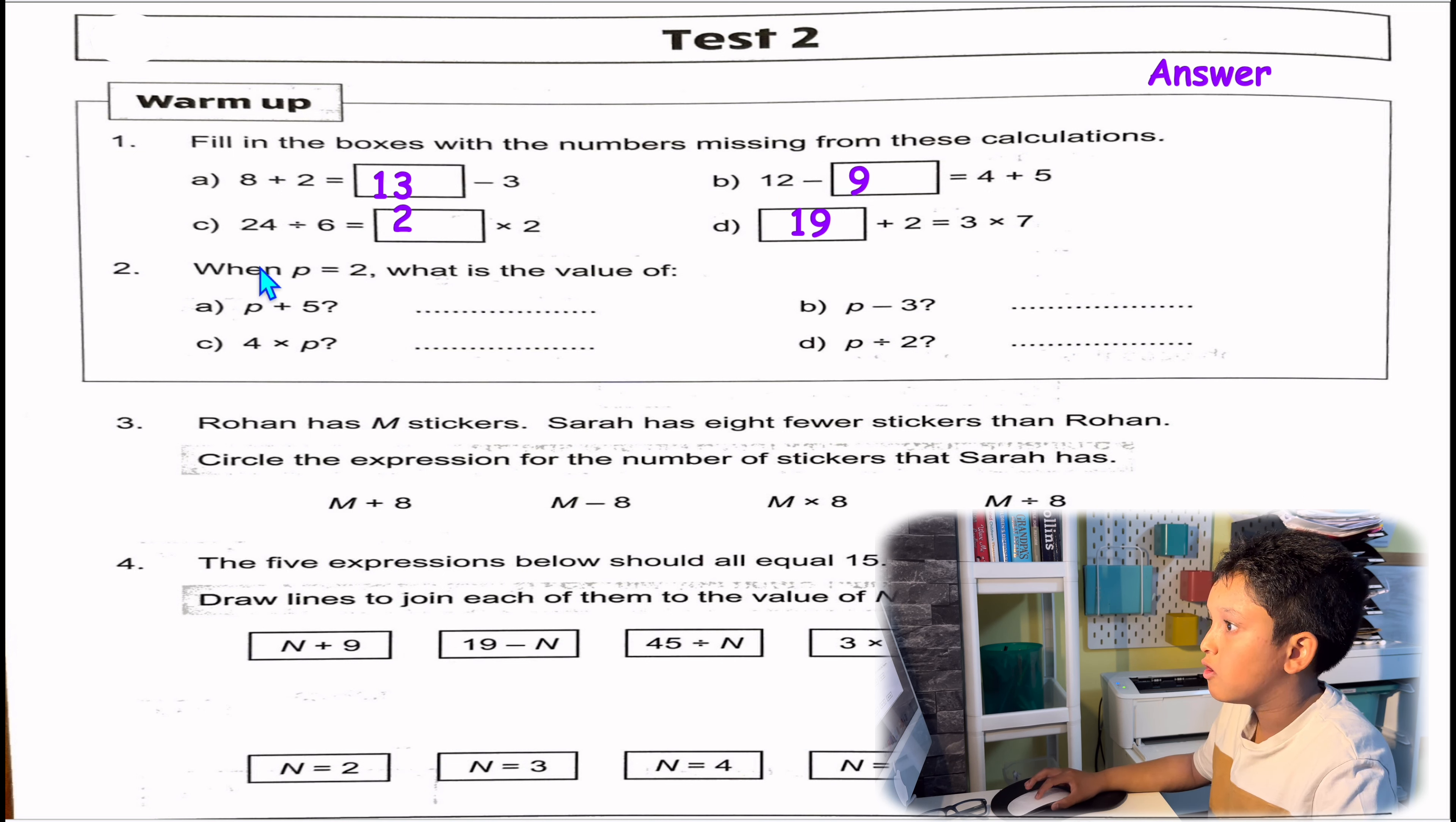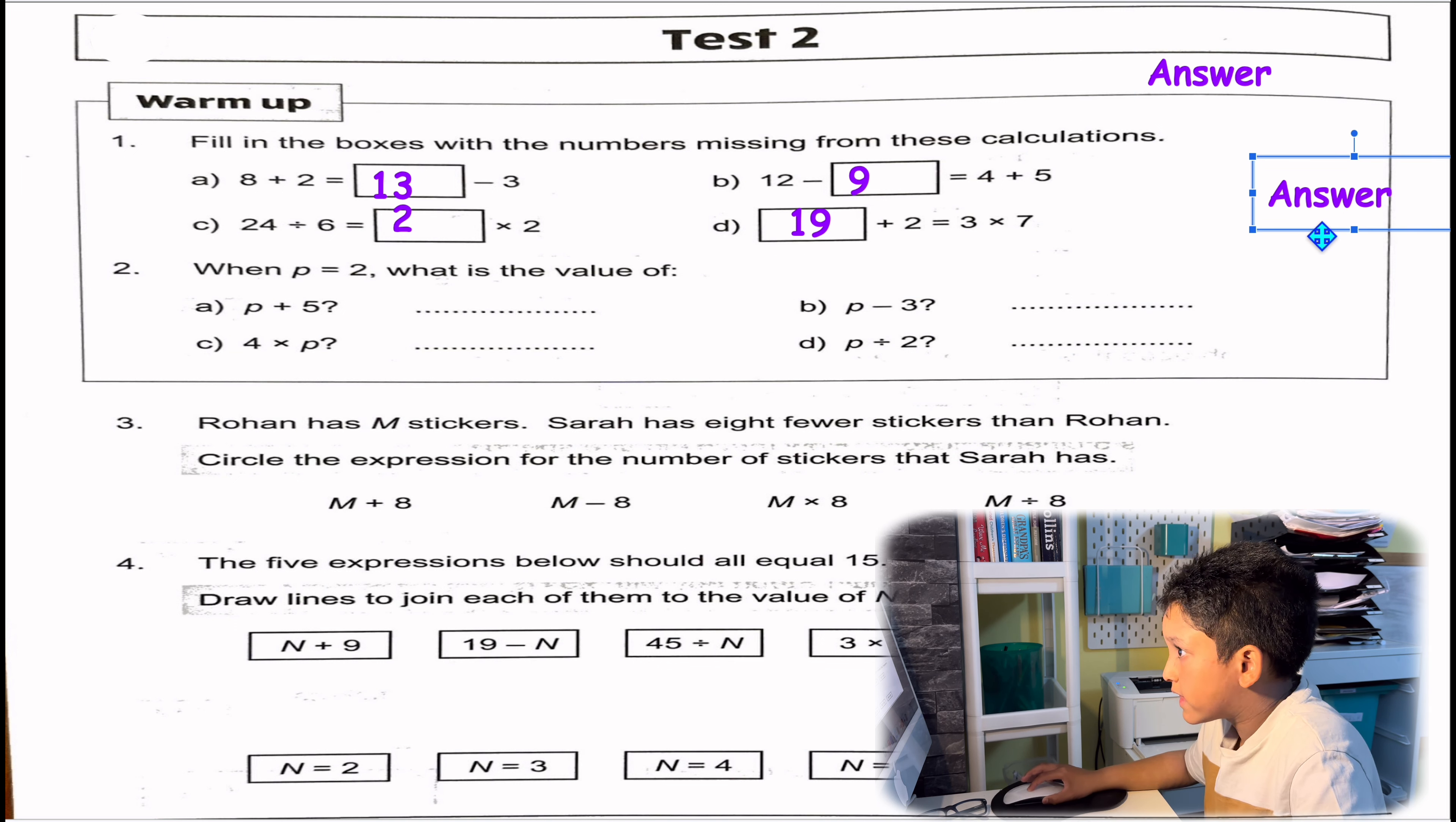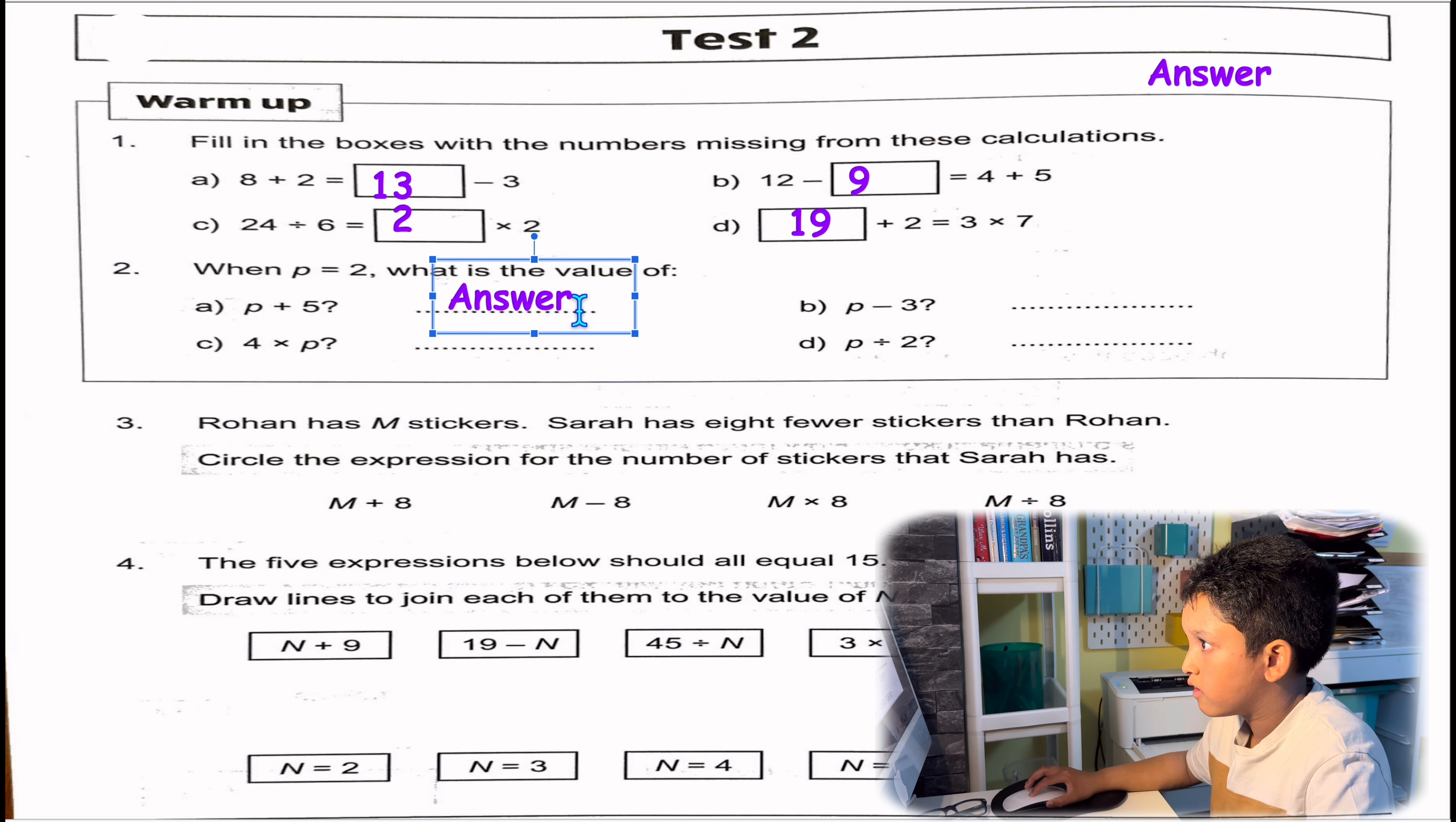Question 2: When P equals 2, what is the value of P plus 5? 2 plus 5. Substitute P with 2. 2 plus 5 is 7. Keep doing that with the rest of the P's and then solve the equation.